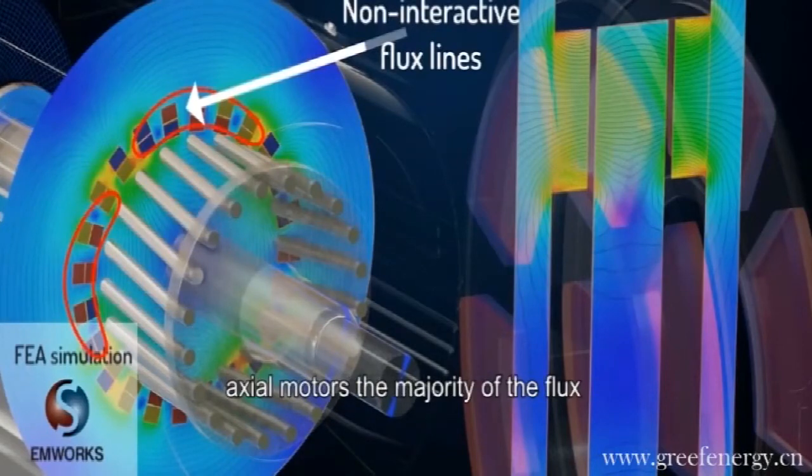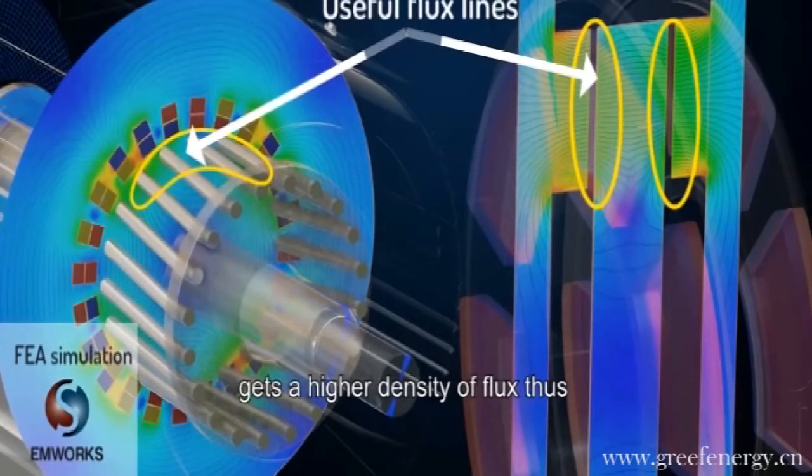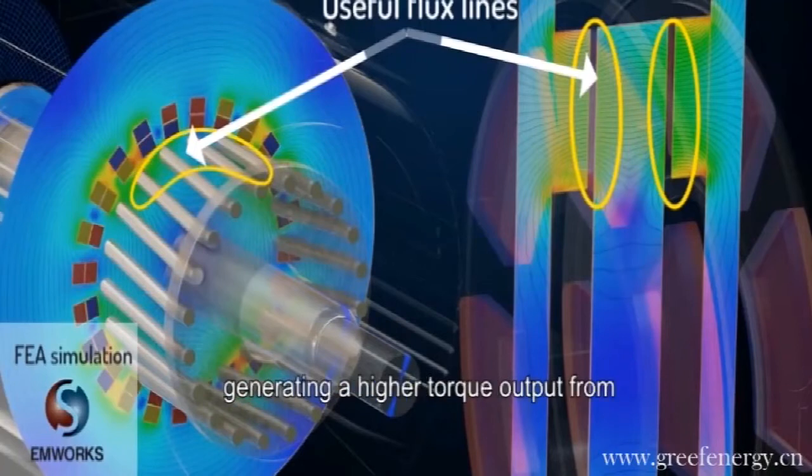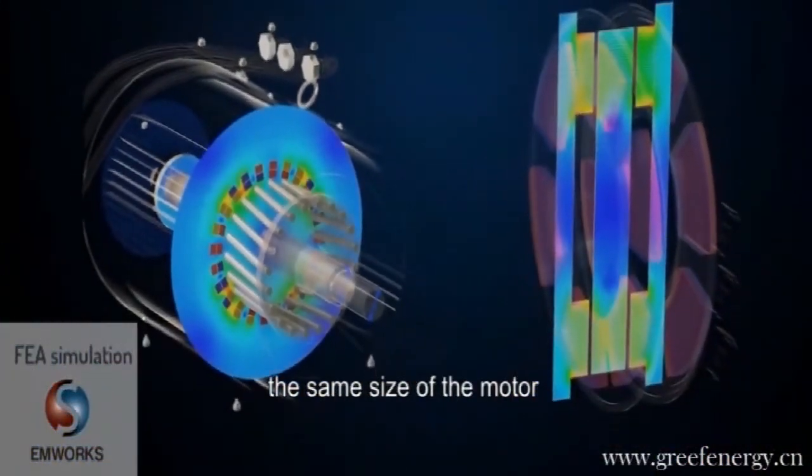On the other hand, in the axial motors, the majority of the flux lines lie in the useful work area to generate torque. For this reason, the axial flux motor gets a higher density of flux, thus generating a higher torque output from the same size of the motor.